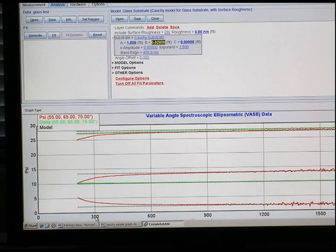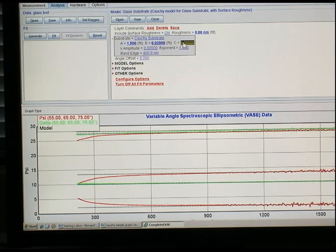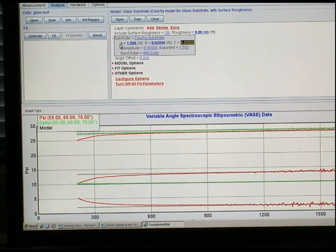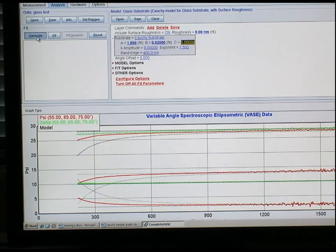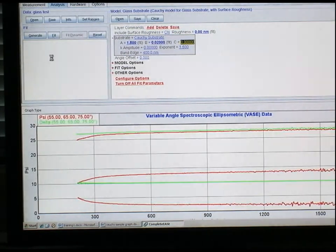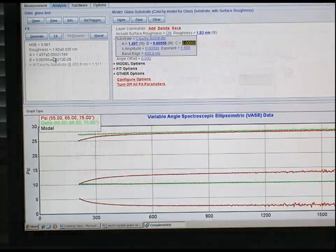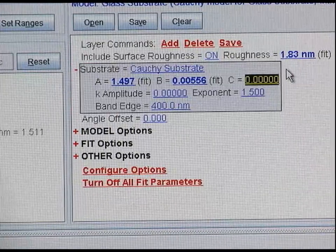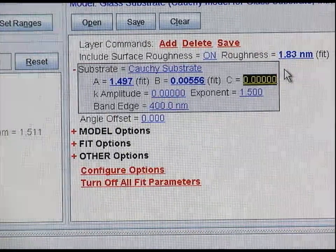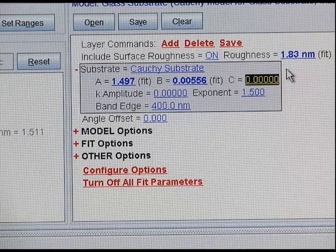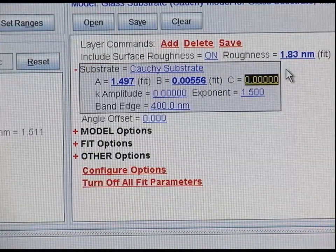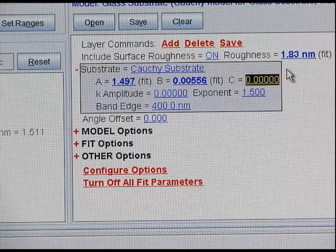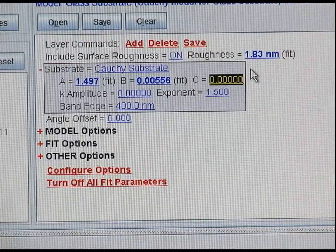If we go back to our psi and delta data, for now to make things simple, I'm going to right click on the C parameter and only fit the A and B parameters. If we generate our model and click fit, then the software does a regression analysis to fit our data. Since the parameters of A, B, and surface roughness are in bold, they were altered in the fitting regression analysis to try to fit the model that we have generated to our experimental data.